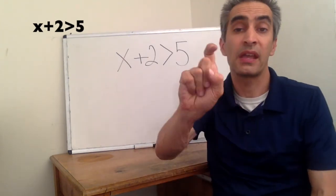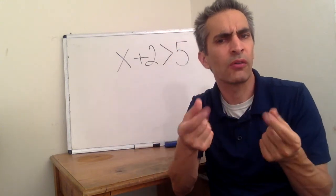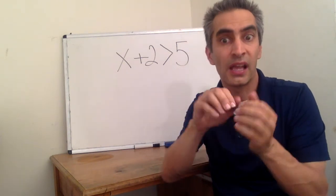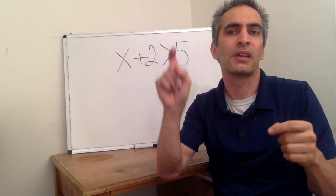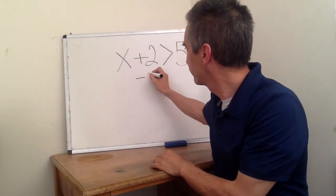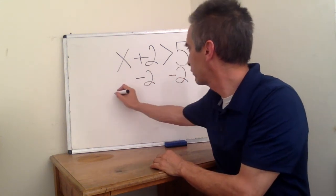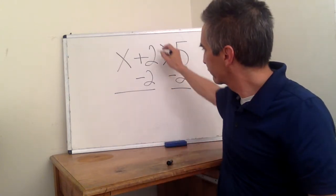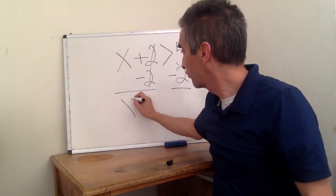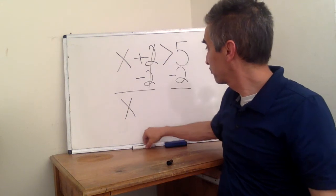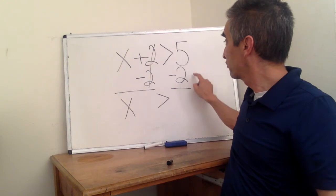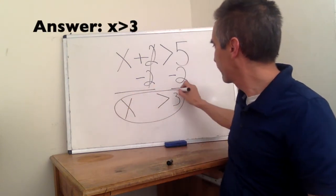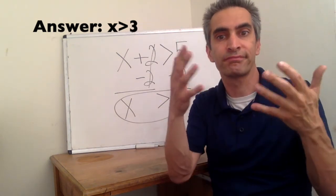Now suppose we have a different problem: X plus two is greater than five. How do we solve it? We're going to have to isolate X. On the left side there's an X and a two, connected by addition. We're going to do the opposite operation — subtract. Two minus two equals zero, we bring the X right down, the greater than symbol comes down, and five minus two equals three. So our answer is X is greater than three, and we're done.